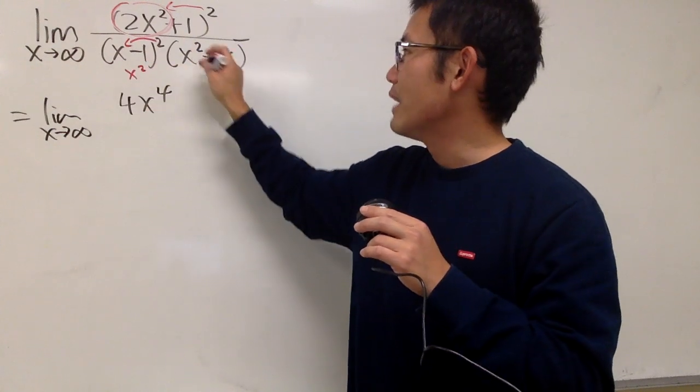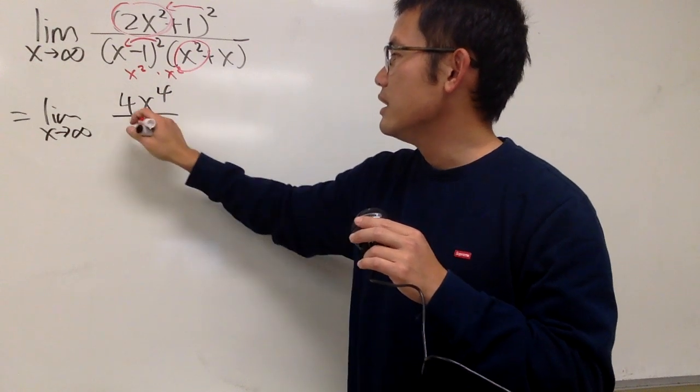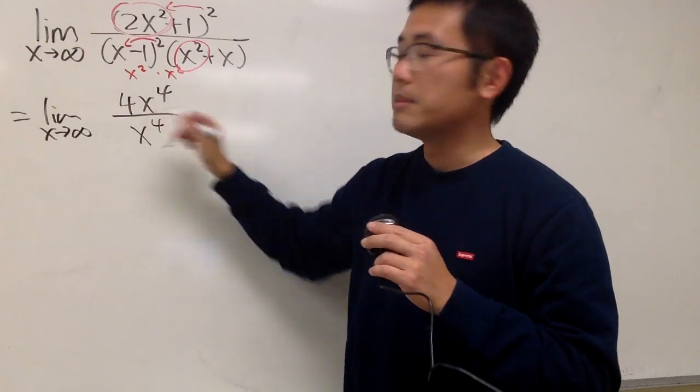But don't forget, we have another x squared here. So it's x squared times x squared. So that will give us x to the fourth power on the bottom as well.